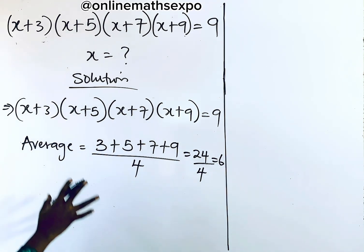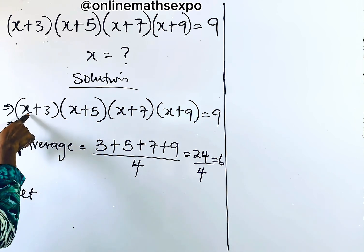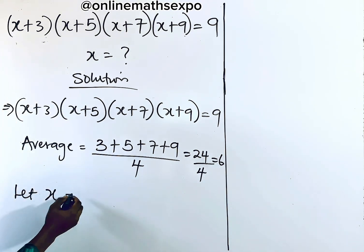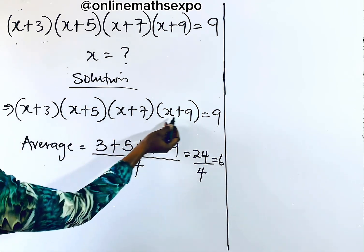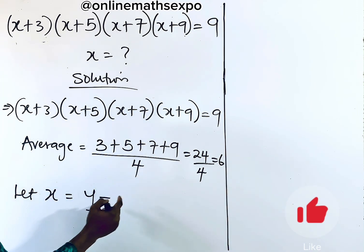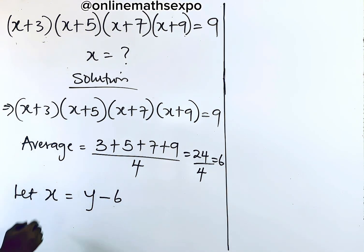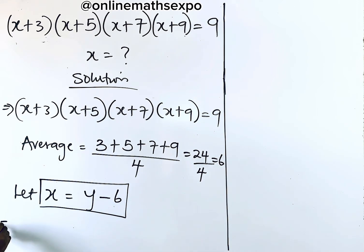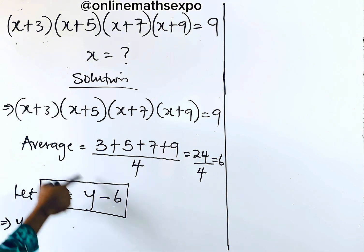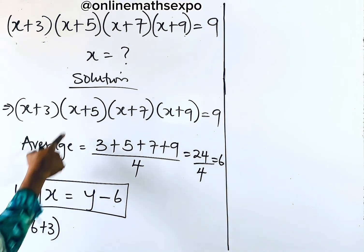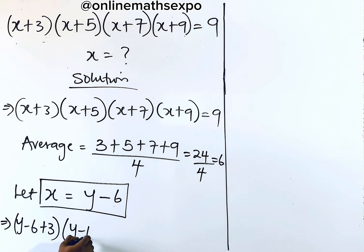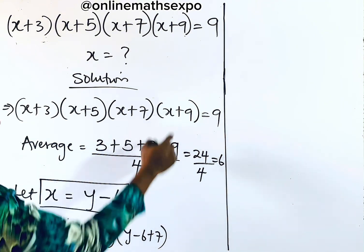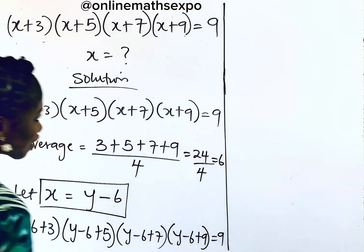So in that case, to replace x and reduce some stress, we can say: let x be equal to y minus 6, introducing another variable. And since these are all adding, you will not take the opposite sign. So, let x be equal to y minus this average we got, which is 6. Substituting this x value into each bracket: for x we have (y − 6 + 3), for the second bracket (y − 6 + 5), for the third (y − 6 + 7), and for the fourth (y − 6 + 9). Everything is equal to 9.